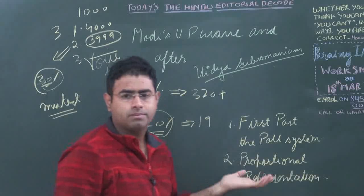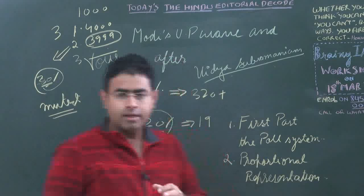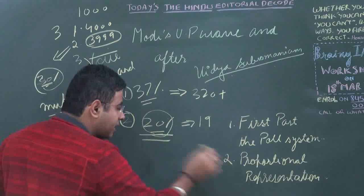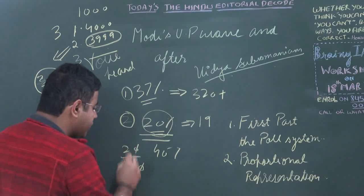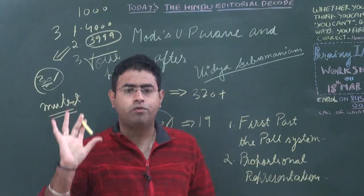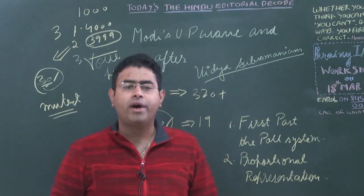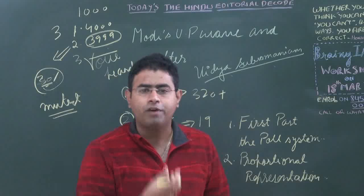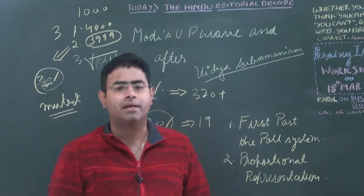What could be the cure? The cure could be proportional representation. Like Bahujan Samaj Party got 20 percent of the vote — as per proportional representation, 20 percent of the 407 seats should go to BSP. So out of 407 seats, 20 percent must go to BSP. In this way you will be able to give voice to every vote, make every voter heard, and exercise democracy in a better manner.